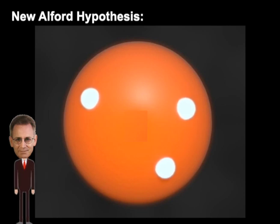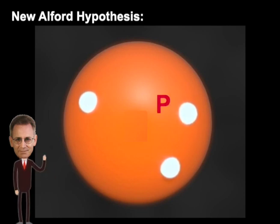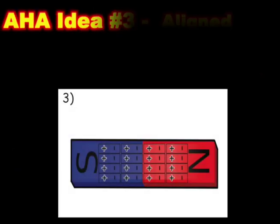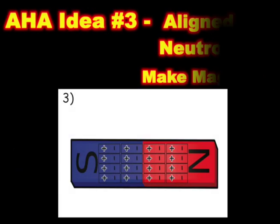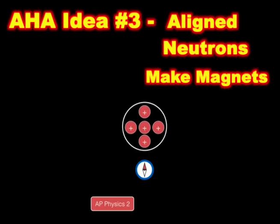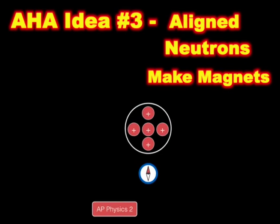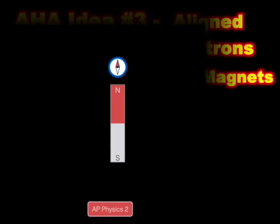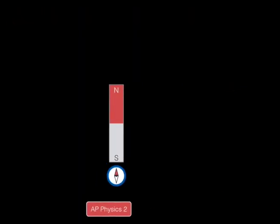Here is my idea. Neutrons have three things: P, E, and G. Aligned neutrons make magnets. In magnets, the negative sides of neutrons all face north and their positive sides all face south. Magnets are just lined up neutrons.